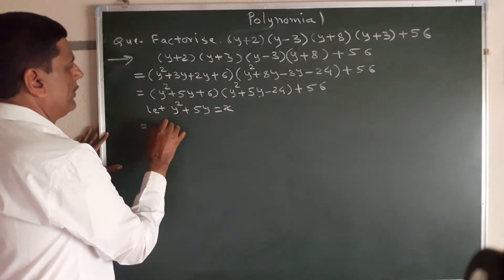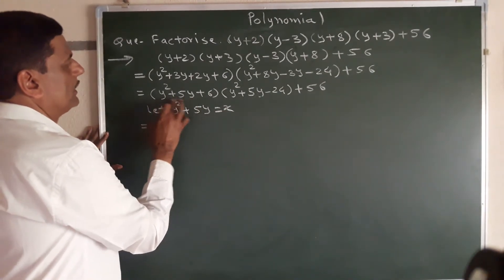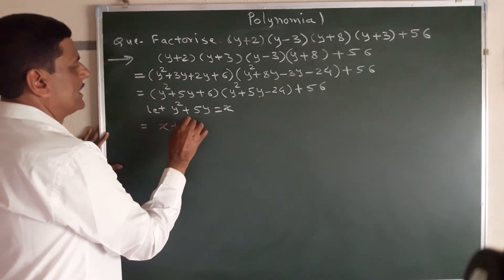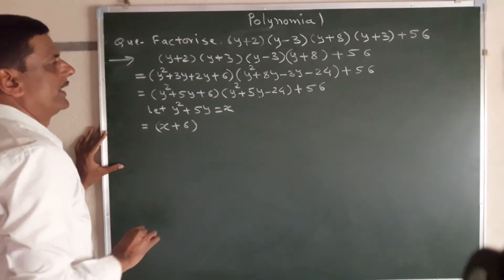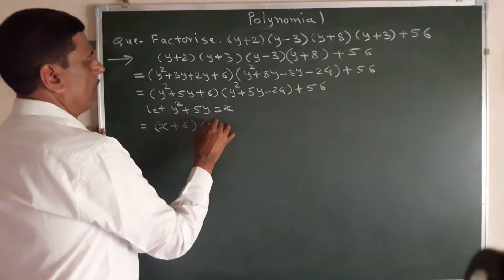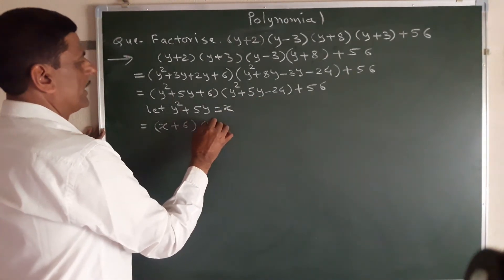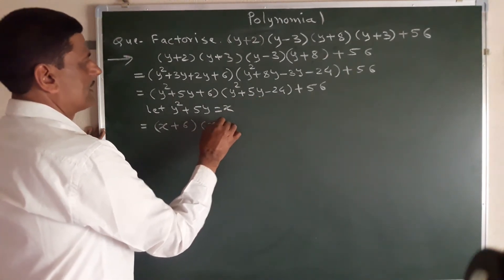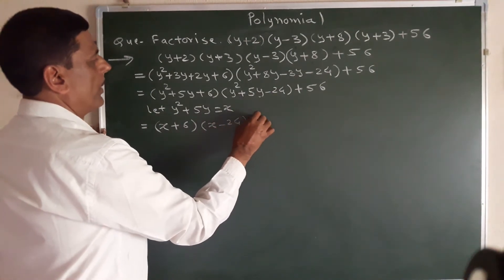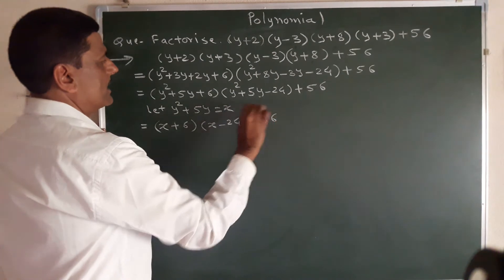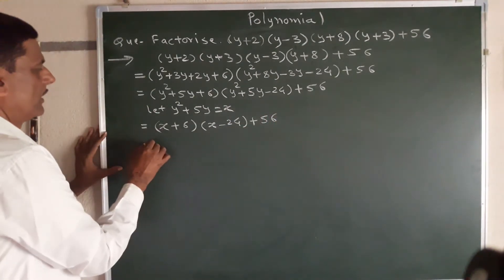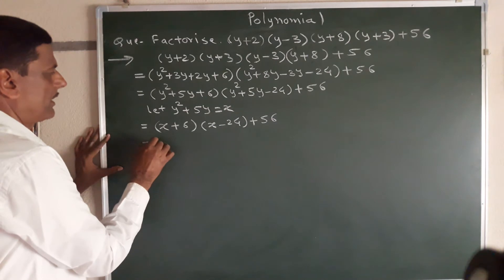So we have (y squared plus 5y plus 6)(y squared plus 5y minus 24) plus 56. We let x equal y squared plus 5y. Then the expression becomes (x plus 6)(x minus 24) plus 56.